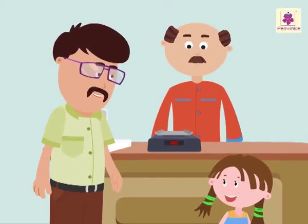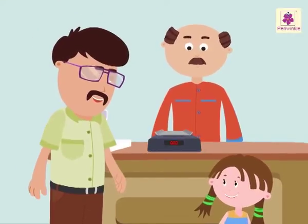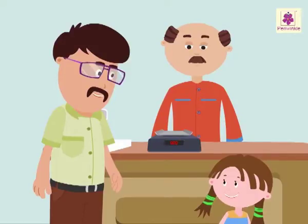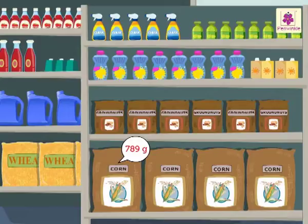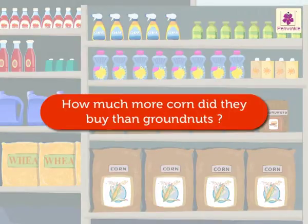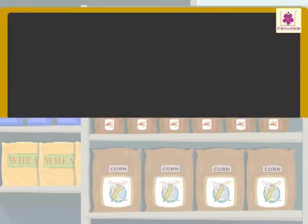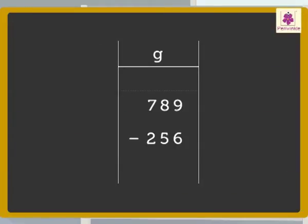So, now do we have to buy anything else? Yes, dear. We have to buy some corn and ground nuts. They are there. We bought 789 grams of corn and 256 grams of ground nuts. Now, let's find out how much more corn did we buy than ground nuts. So, here we need to subtract the numbers to get the answer. You have already learnt subtraction. So, let's do it.